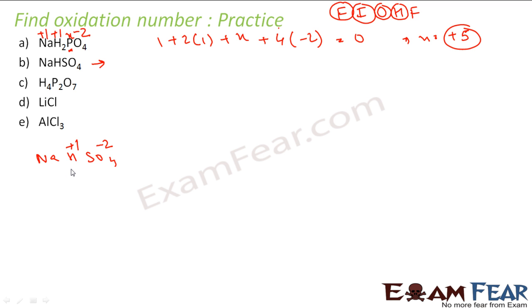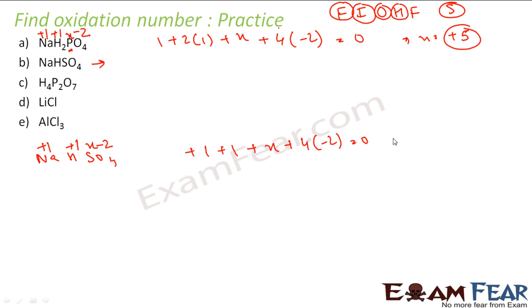I apply the group 1 rule: sodium is plus 1. Sulfur is x. Now I apply the sum rule: sodium plus 1, plus hydrogen plus 1, plus sulfur x, plus 4 oxygens at minus 2, equals 0. Solving this gives x equals plus 6. So sulfur is plus 6 in NaHSO₄.